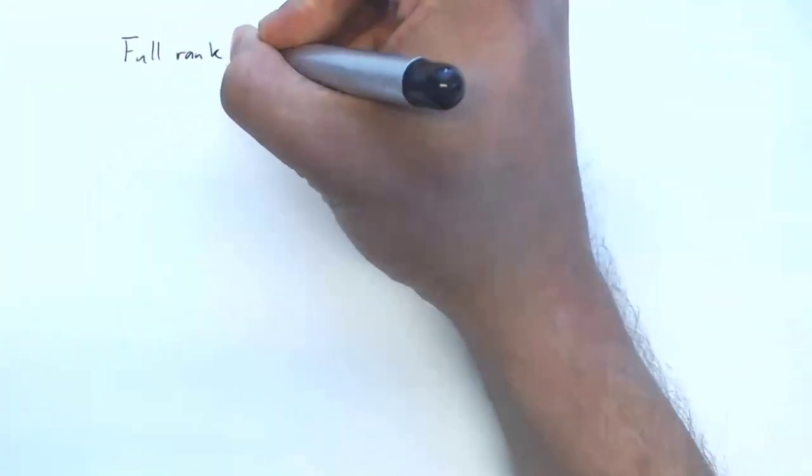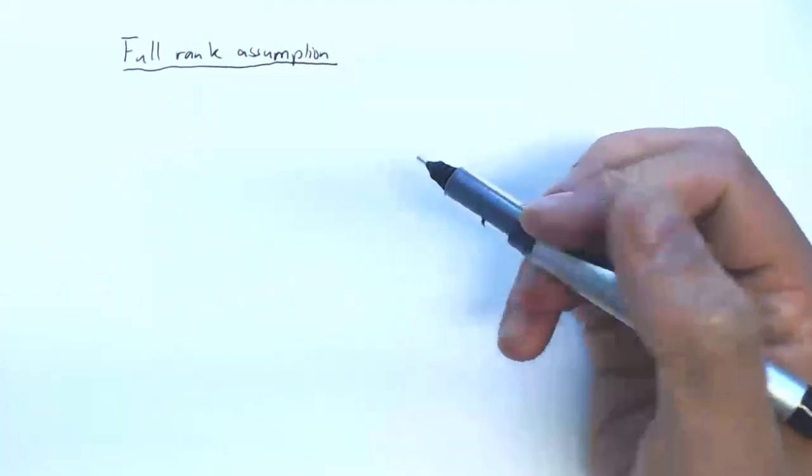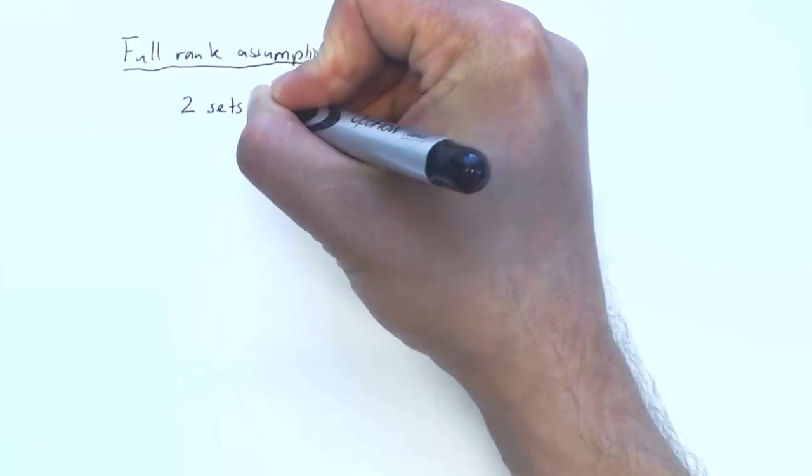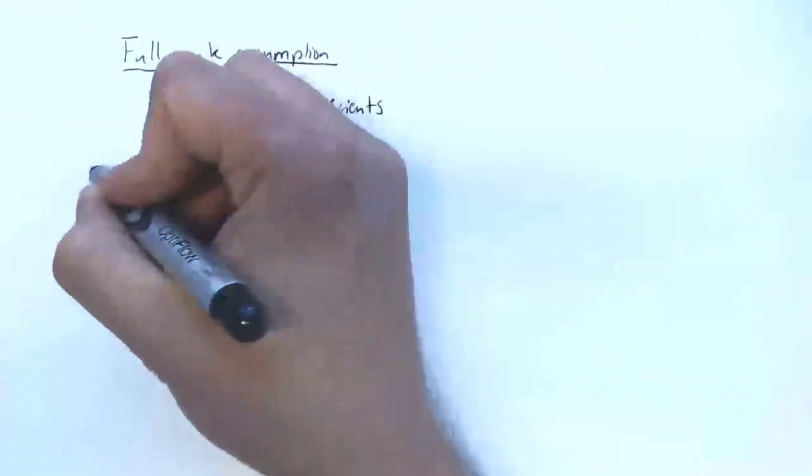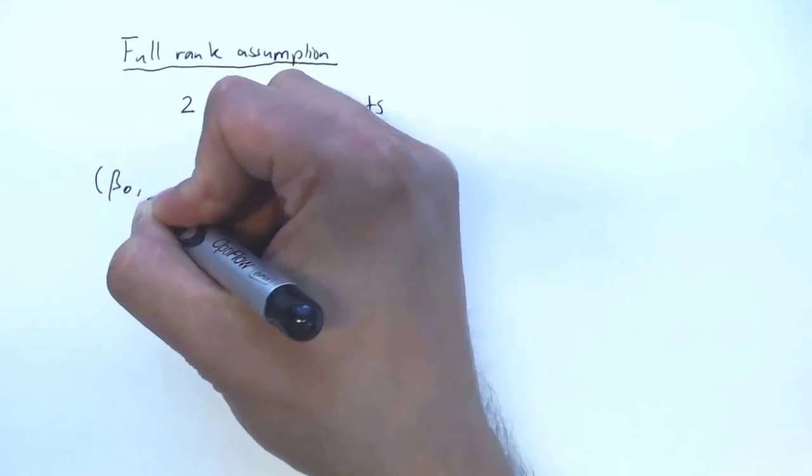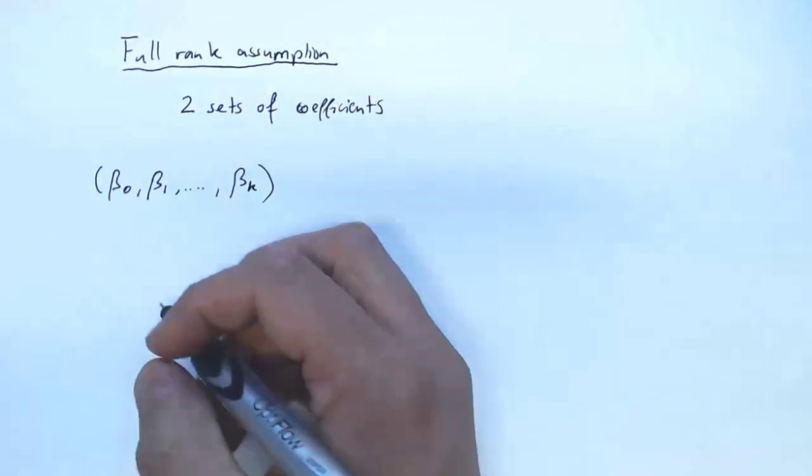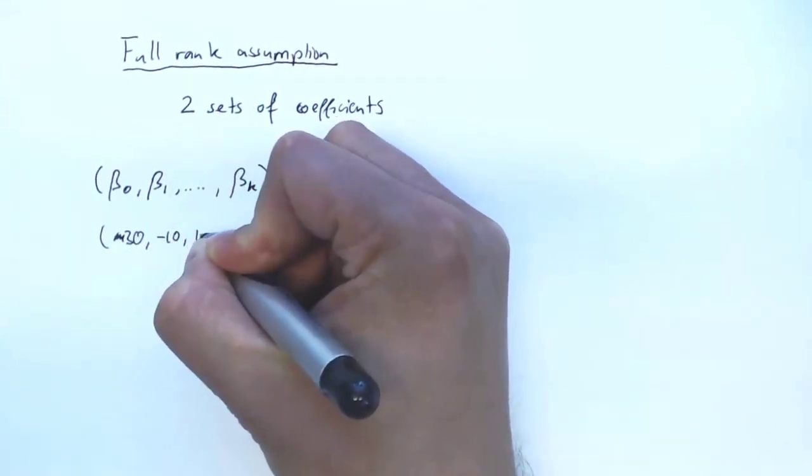For this, we want to describe the problem that we encountered when we discussed the dummy variable trap in a slightly more general setting. A similar problem occurs whenever we have two sets of coefficients. The first set of coefficients, let's just call β₀, β₁, and so on. In our dummy variable trap example, the numbers were 30, -10, 10, and 2.